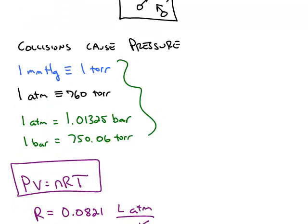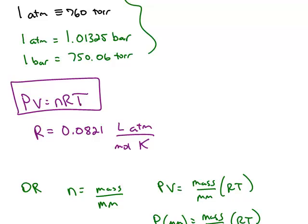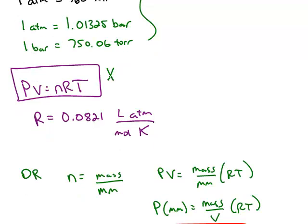The pressure of a gas is related to its volume and its temperature by the ideal gas equation, PV equals nRT, where R is the gas constant, and it's 0.0821 liters times atmosphere divided by mole and kelvin. So when you use this equation to solve for a variable, make sure that the units cancel. The units of R will guide you as to which units the other variables have to be in order to cancel.